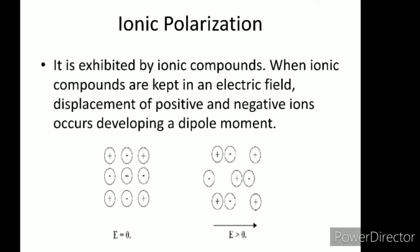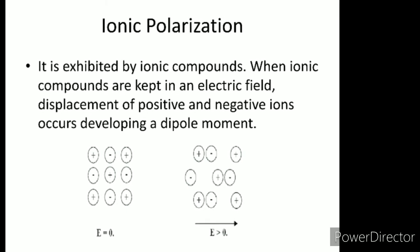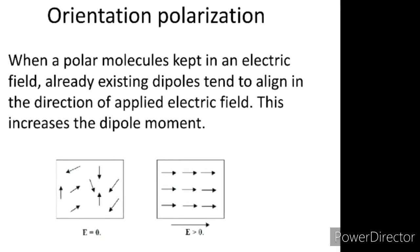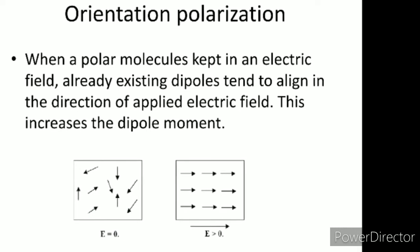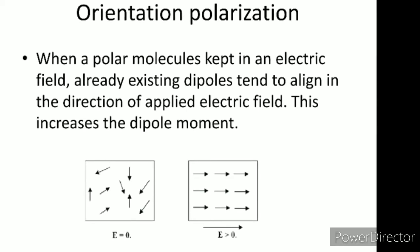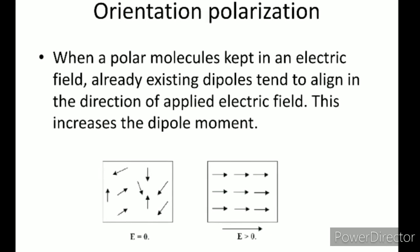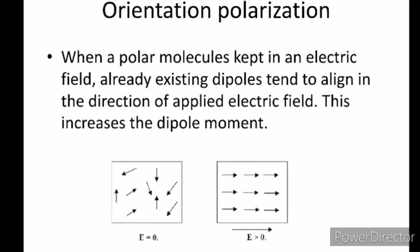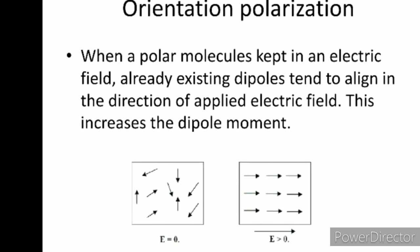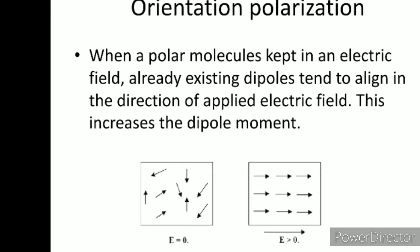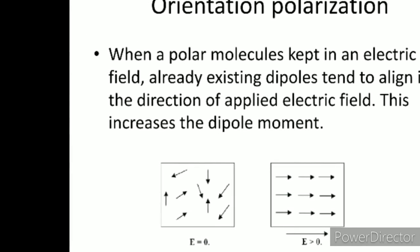The third type is orientation polarization. When polar molecules are kept in an electric field, the already existing dipoles tend to align in the direction of the applied electric field, which increases the dipole moment. Polar molecules are permanent dielectrics where positive and negative charges are always separated, but they randomly align in all possible directions. When you apply the electric field, all of them tend to align in one particular direction. The first figure shows this without electric field and the second with electric field.